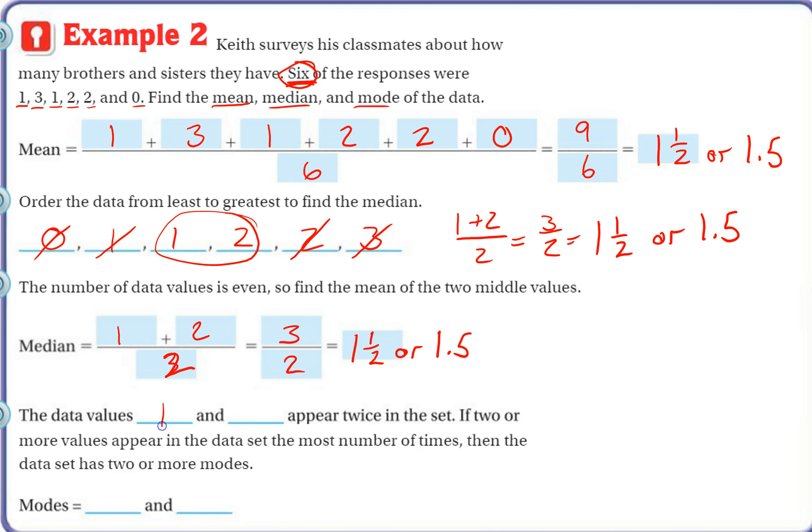Okay, the data values one and two both appear twice. If two or more values appear in a data set the most number of times, then the data set has two or more modes. So we don't average them out. One comes up twice, two comes up twice. So we say there are two modes, one and two. Alright, thanks again for watching, and I'll see you on the next one.